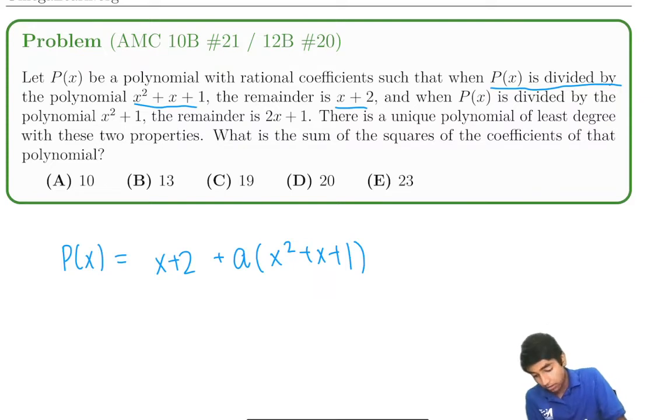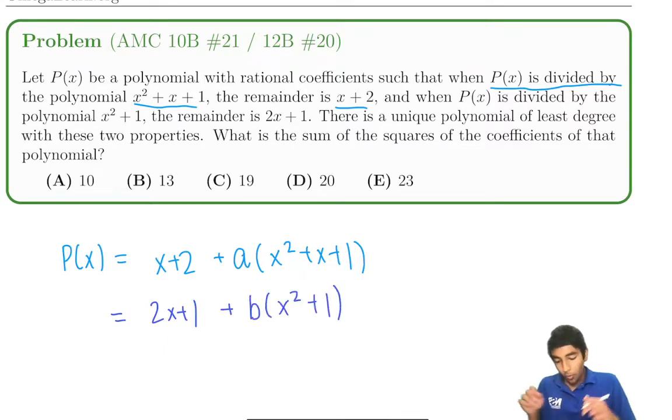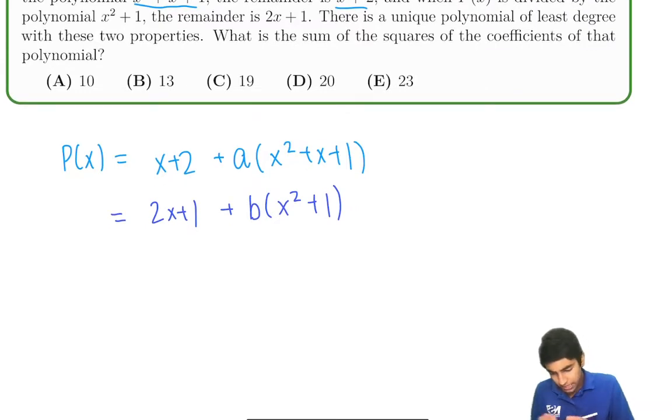But P of x is also 2x plus 1 plus b times x squared plus 1. Oh, but these, they're equal, right?